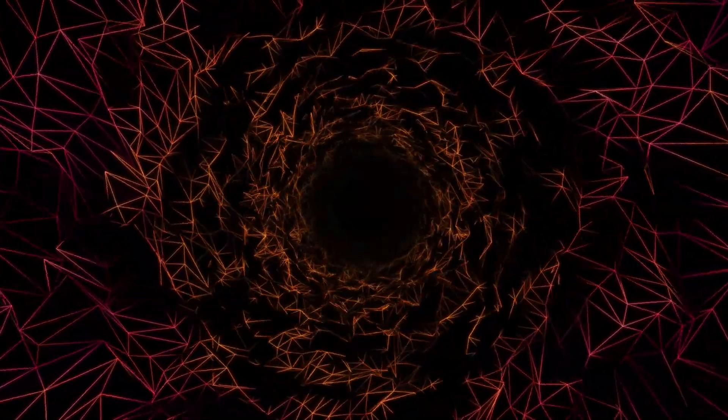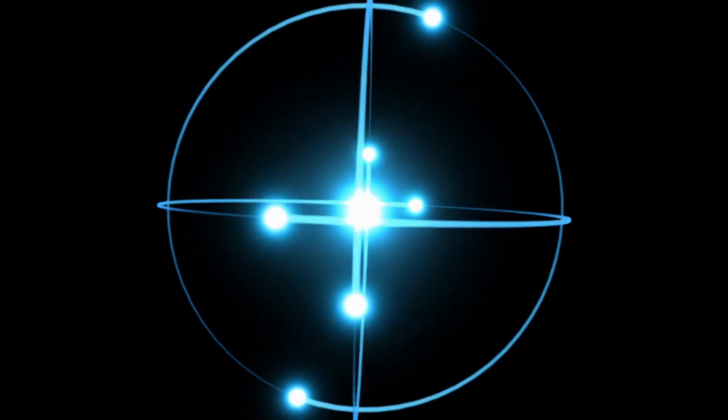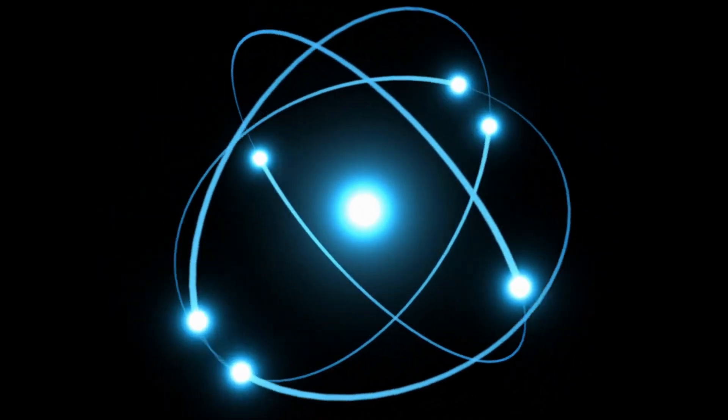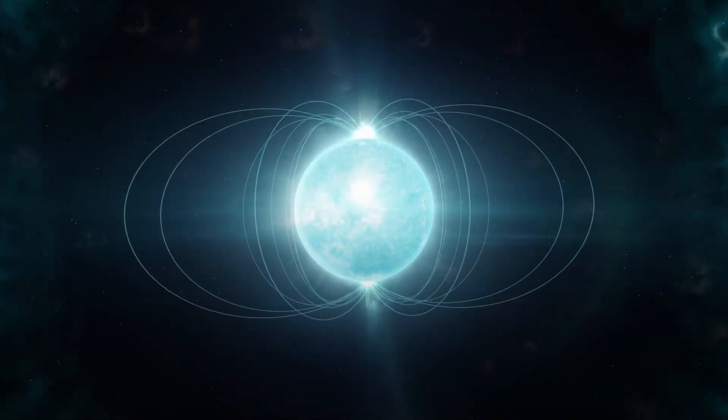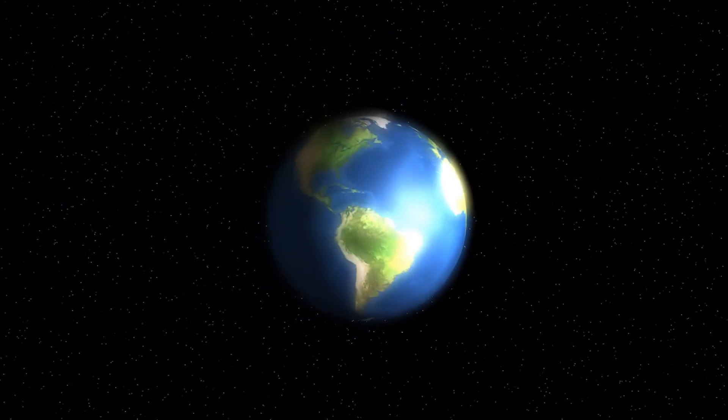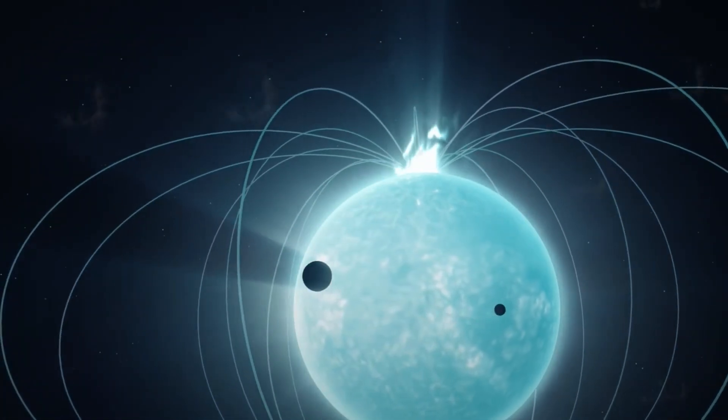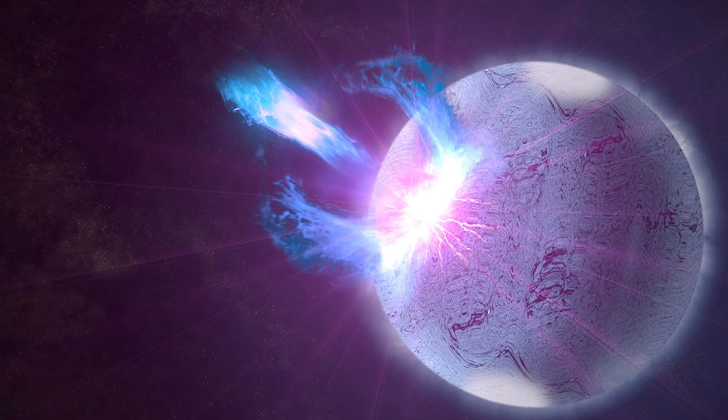Initially, researchers speculated that the radio signals might be emerging from a magnetar, a type of neutron star characterized by its extremely intense magnetic field. Magnetars have the most vital magnetic fields in the universe, with a strength that can be a trillion times greater than Earth's magnetic field.